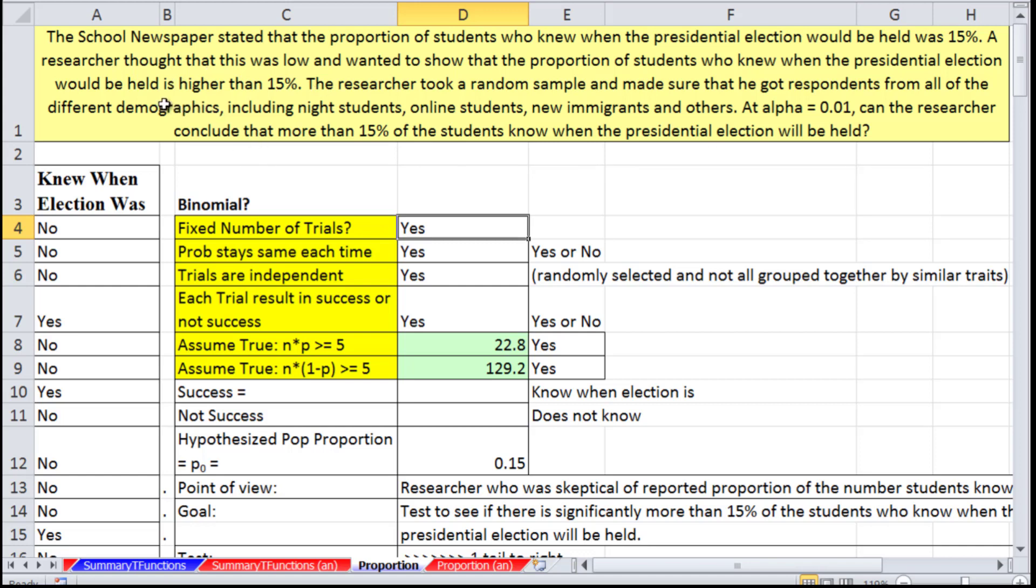One thing the researcher probably did is they thought this seems really low. Maybe they made an error when they sampled. The population being sampled maybe didn't include some groups. So when the researcher went out, they made sure to do a true random sample that really sampled the actual population at this school.